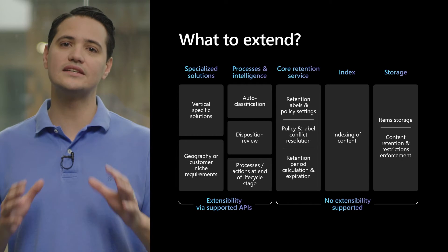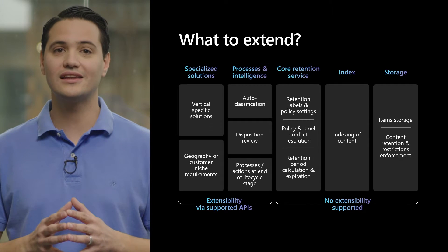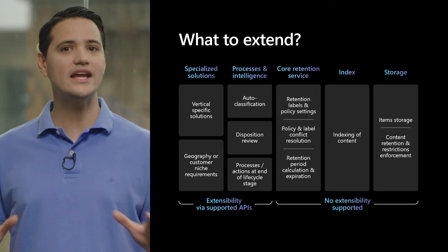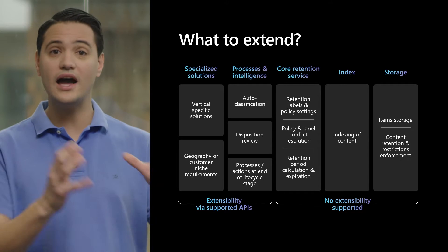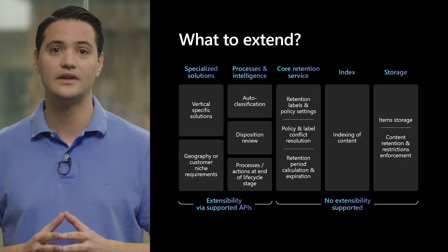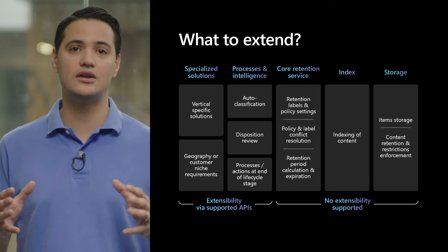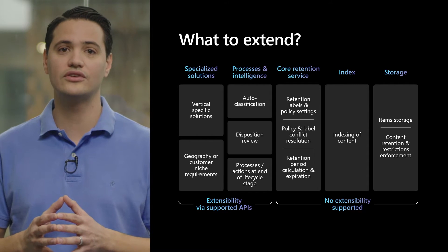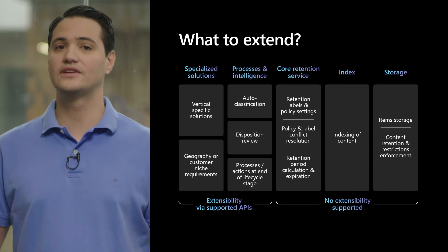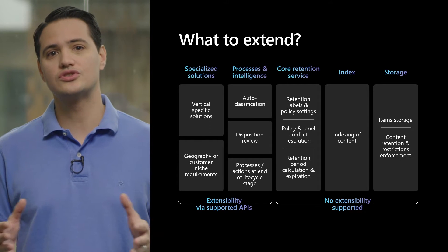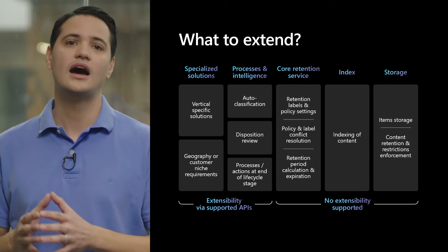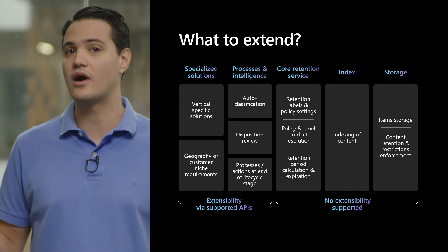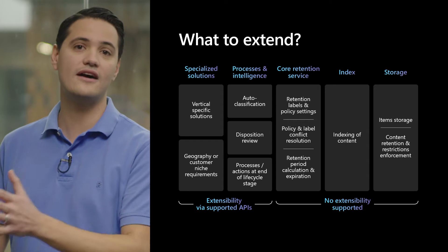Of course, this still leaves a lot of areas to extend and customize. Basically, anything to do with how content is labeled or classified is an option. For example, if you build some great technology to automatically classify data, you can do that and just apply the correct retention label to the items you identify. Similarly, any of the processes executed when an item expires — whether it's disposing, customizing our own disposition review process, or even creating custom processes of your own — all of this is fair game. And finally, any specific solutions to meet niche requirements or vertical solutions are definitely areas we encourage developers to dive right into.